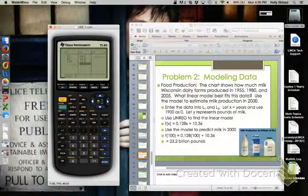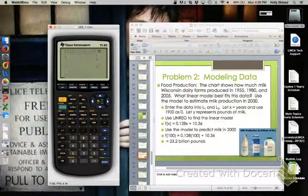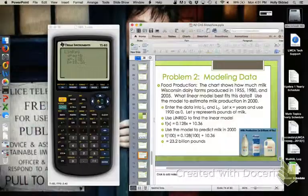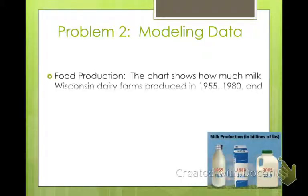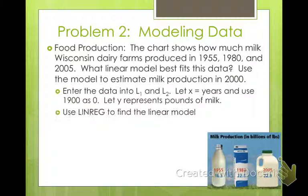Once we have our data in, we go to Stat, over to Calculate, and we want to find a linear regression — the problem asks us to find the linear regression. Go ahead and hit Linear Regression, then Enter. There's our linear regression: we have 0.128 and 10.36. So we found that best fits our model.